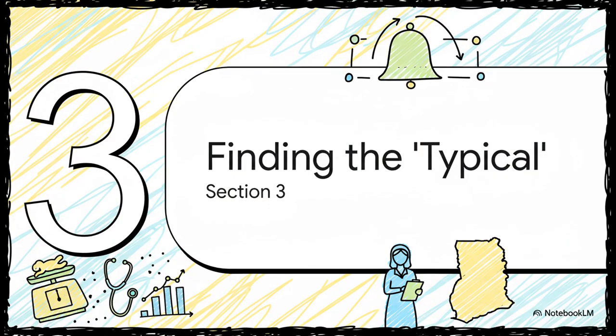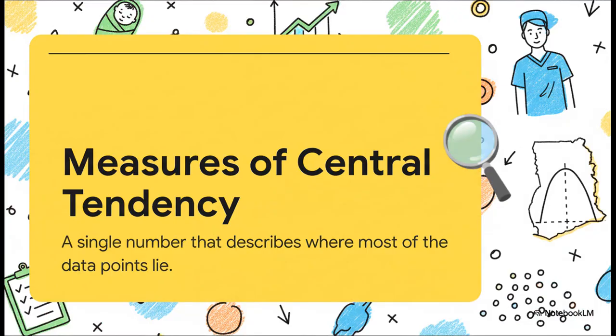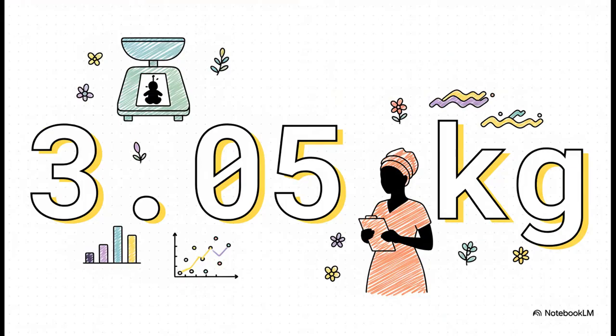The data is organized and we can see the general shape of it. But a lot of the time, what you really need is one single number to summarize the whole thing — a shortcut. What is the typical, or central, value for these newborns? The official name for that idea is measures of central tendency — basically a single value that tries to describe the center of all your data. Think of it like finding the balance point for all those different birth weights. There are three common ways to do this. First up is the one we all remember from school: the mean. It's just the plain old average — you add up all the weights and divide by the number of babies. In a larger data set, the mean weight could be something like 3.05 kilograms.